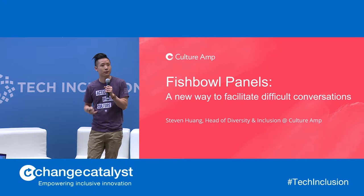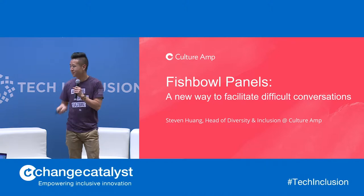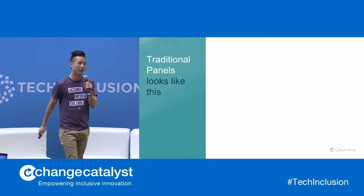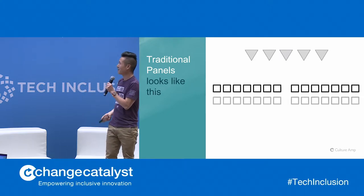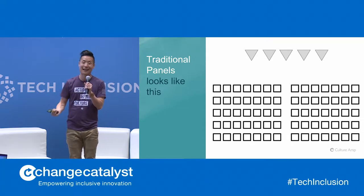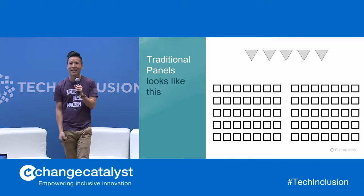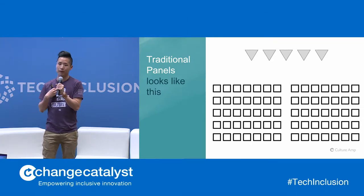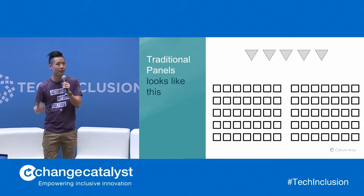It's a new way to facilitate difficult conversations. I'll tell you what they're all about, what to expect, and how to run one as well. A traditional panel is what this room is set up for — you have speakers designated by triangles in the front of the room and audience members represented by squares listening in. There's nothing wrong with traditional panels. They're a great way to learn a new skill, to hear from experts on their craft — how to implement a diversity recruiting strategy, how to launch ERGs in a global context.